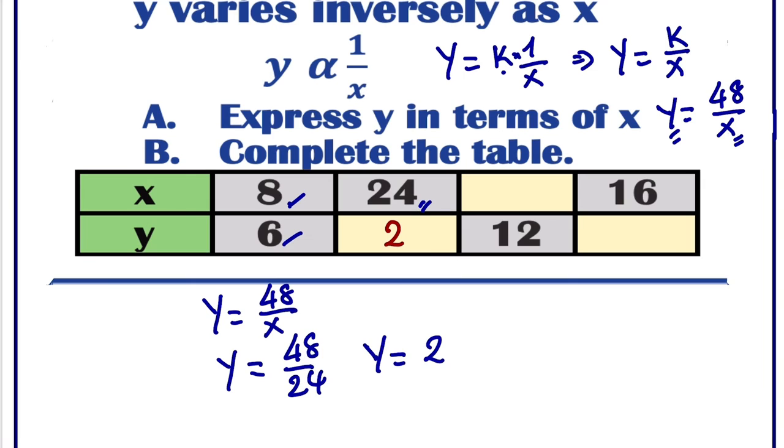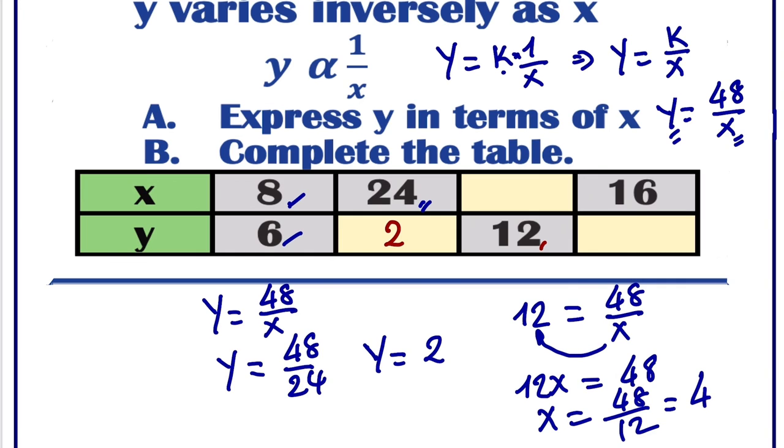Next, still by using the formula here, we can see that y is given and x is not. So we just plug in the value of y here so that we can get the value of x. So we are going to have 12 equals to 48 over x. So if we cross multiply, we are going to have 12x should be equal to 48. So x would be equal to 48 divided by 12. 48 divided by 12 is 4. So here we are going to have 4.